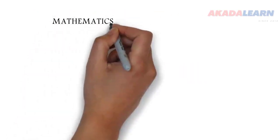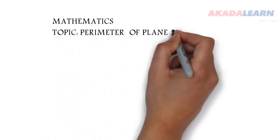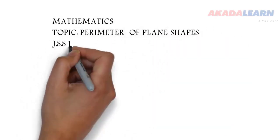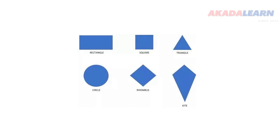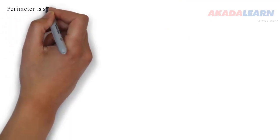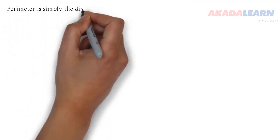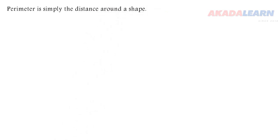Welcome to class. Today we are going to see how to calculate the perimeter of some plane shapes. We have pictures of some plane shapes here. When we say perimeter, what are we talking about? Perimeter is simply the distance around a particular shape.